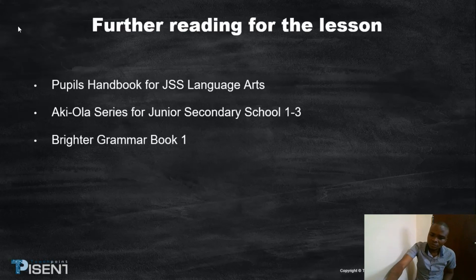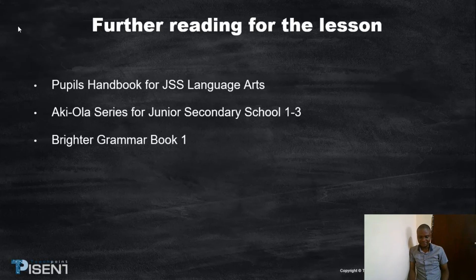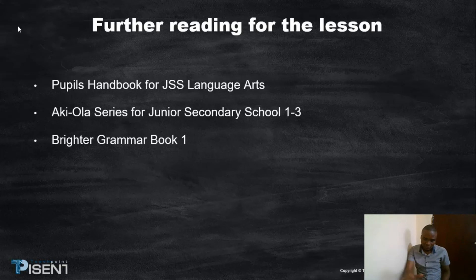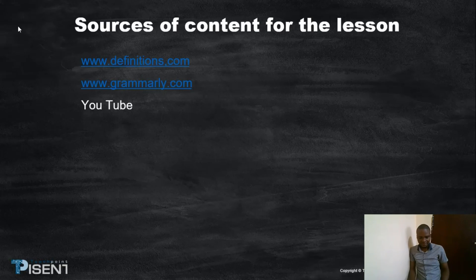Now let's take a look at the books that are prescribed for you to read at home. One: People's Hands book for JSS language arts. Second: Akiola series for JSS secondary school. Third: A Better Grammar, book one. The sources of content for these lessons are from the following websites: www.definitions.com, www.grammarly.com, and YouTube.